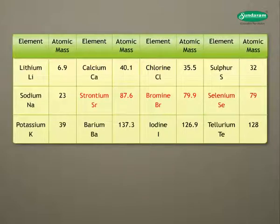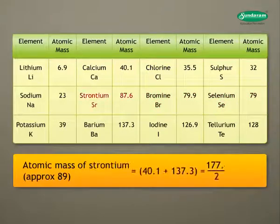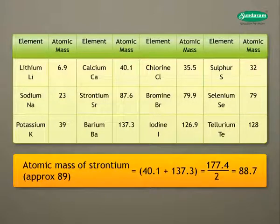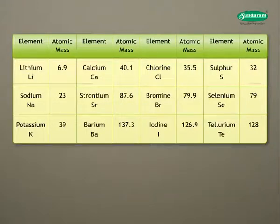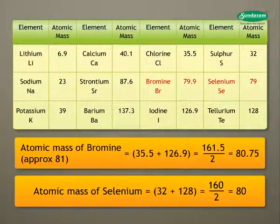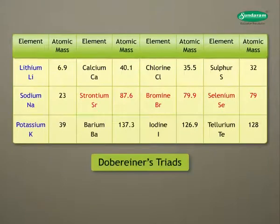For this, we find the mean of the extreme two elements. To find the atomic mass of strontium, we add the masses of calcium and barium and divide the sum by two. You can see that the mass obtained is approximately the same as shown in the table. Similarly, we can verify the atomic masses of bromine and selenium. The triads were known as Dobereiner's triads.